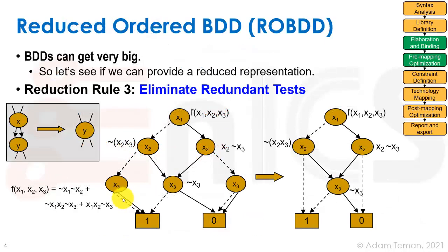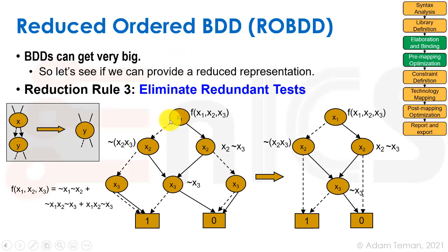A BDD is a way to take a truth table and represent a Boolean function as a binary tree. The problem is that each variable doubles the number of nodes, giving a very large data structure. A Reduced Order BDD applies an algorithm to remove redundant nodes, arriving at a much smaller data representation. One nice property is that it's canonical — applying the reduction rules with the same variable ordering always gives the same ROBDD. So for ordering x1, x2, x3 we get one ROBDD; with x3, x2, x1 we'd get a different one.